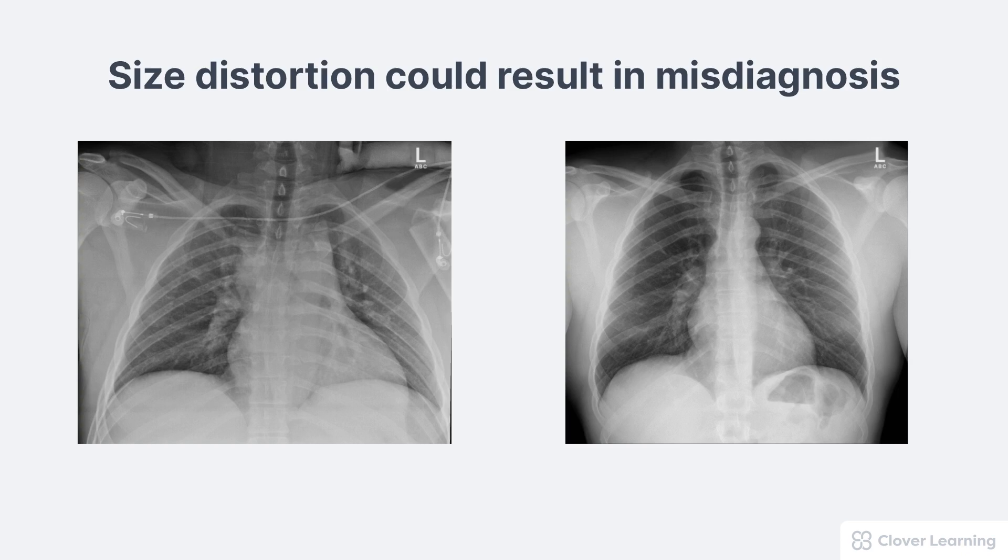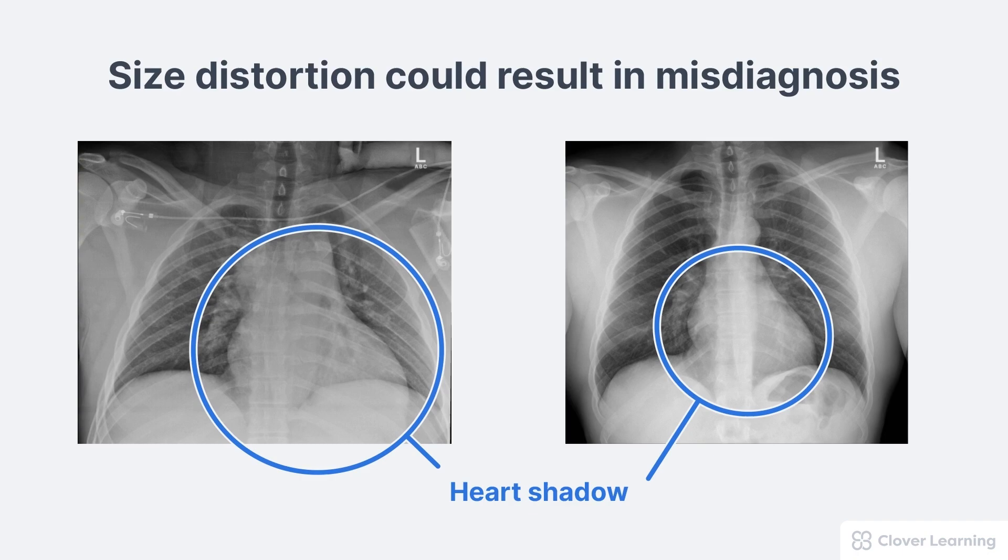For example, size distortion may make the heart shadow within a chest radiograph seem larger than it actually is, which could result in a false diagnosis of cardiomegaly.